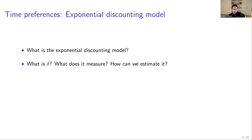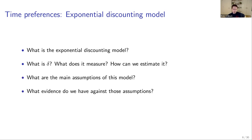The first topic is time preferences, in particular the exponential discounting model. You should know what the model is, what delta (the time preference parameter) measures, and how we can estimate it assuming exponential discounting is correct. You should also know the main assumptions of the model and what evidence we have against those assumptions — covered in detail in lectures 3 and 4.